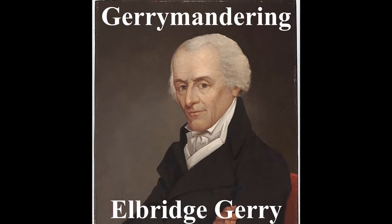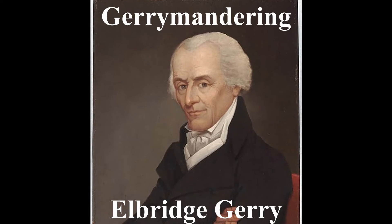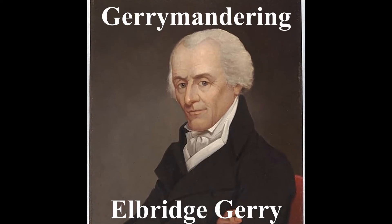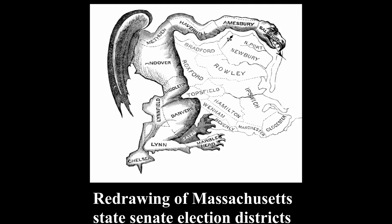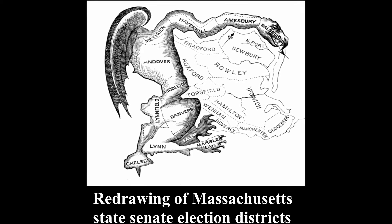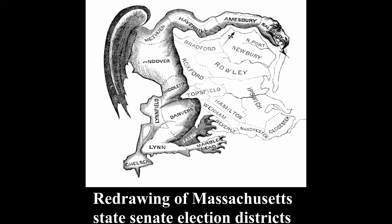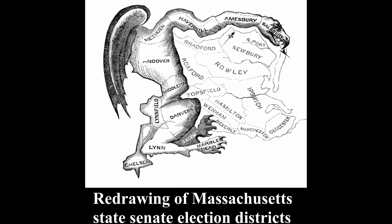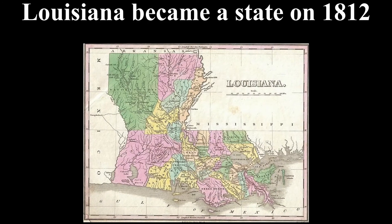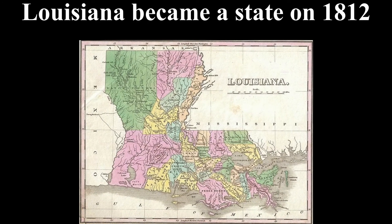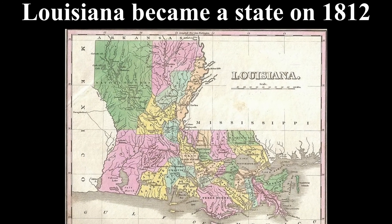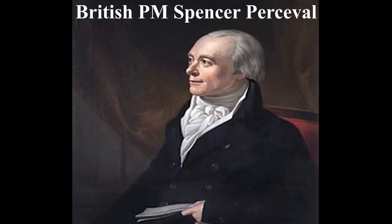Massachusetts Governor Elbridge Gerry became known for developing gerrymandering, after he redrew his state's districts to favor the Democratic Republicans in early 1812. Also, Louisiana became a state and could vote in this election for the very first time.